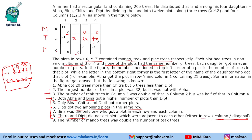We are left with Abha and Bina. Since only Bina, Chitra and Deepti got corner plots, Abha will not get the remaining corner plot — that goes to Bina. Bina must have a plot in each row and each column. Using available positions, Bina fills the remaining 2 required slots, and the last 2 plots go to Abha. So all plot assignments are now determined.